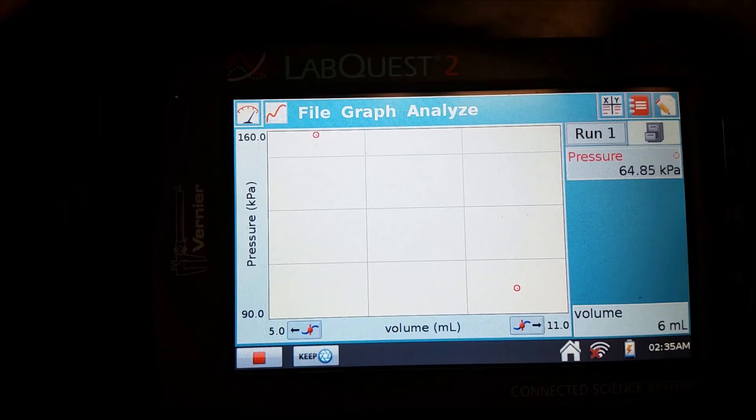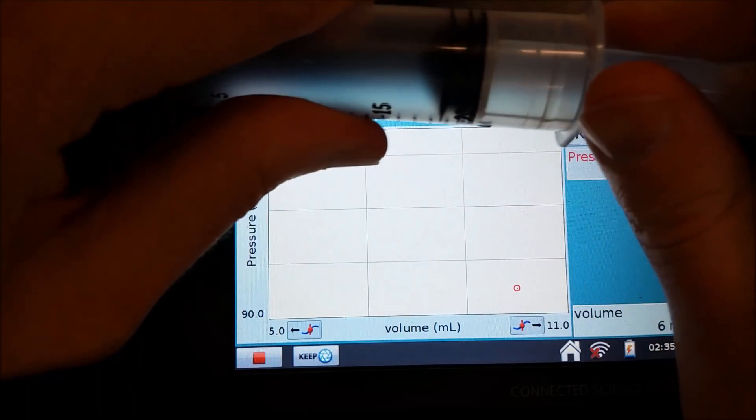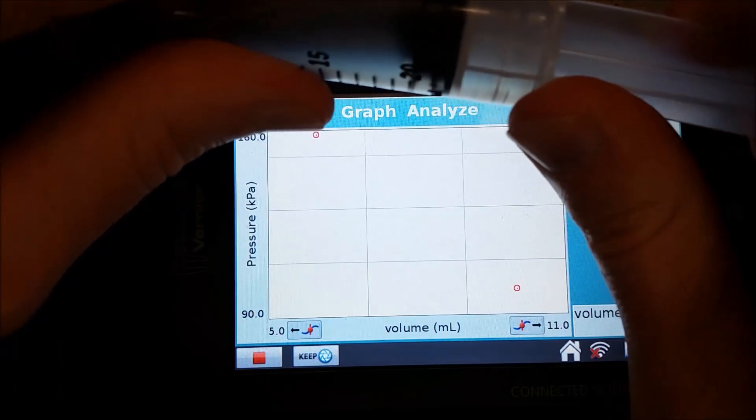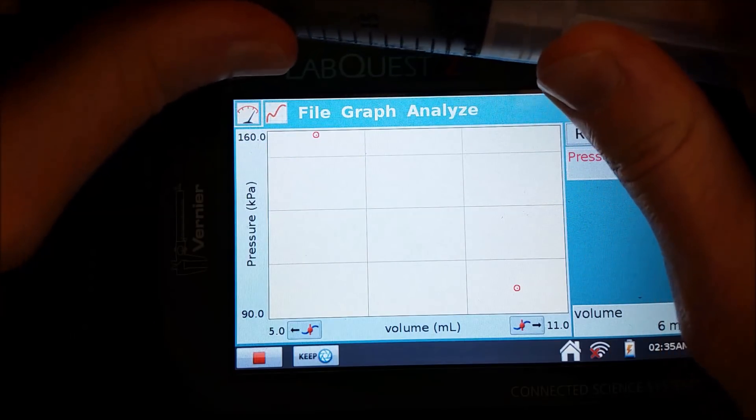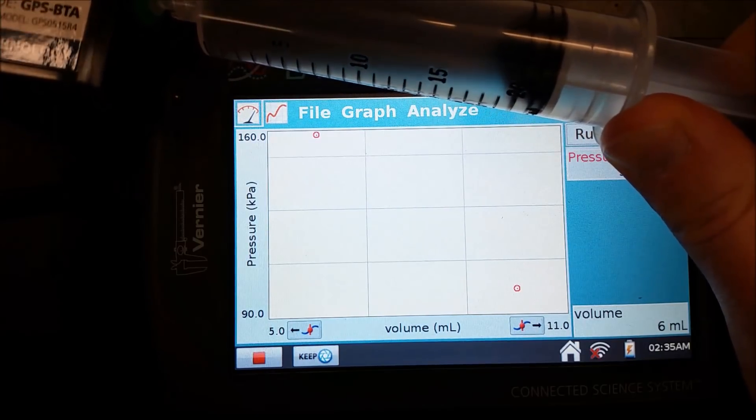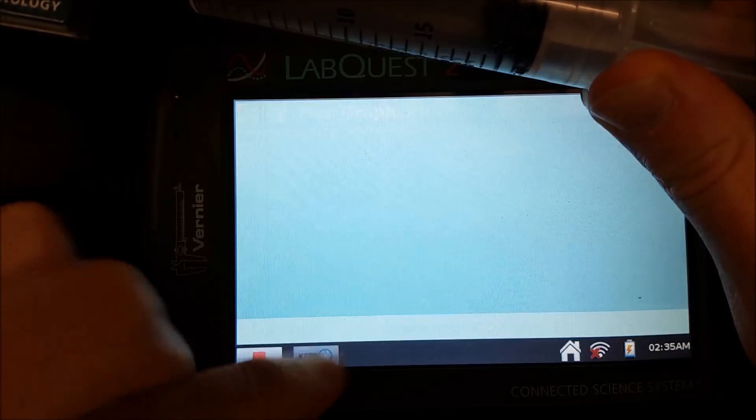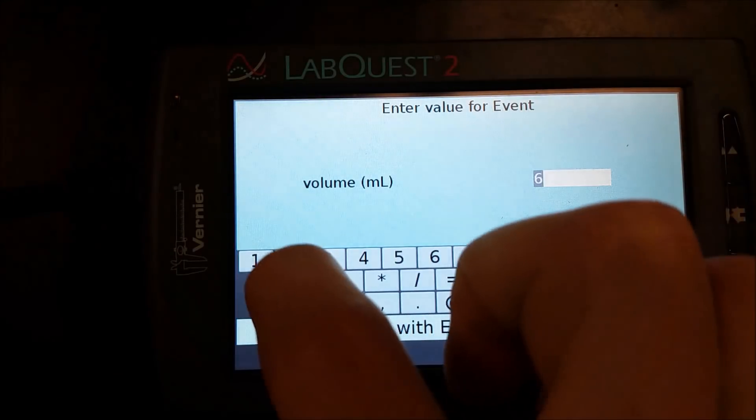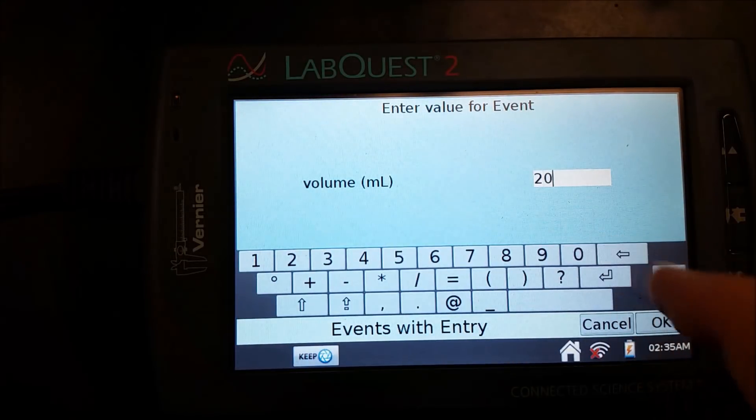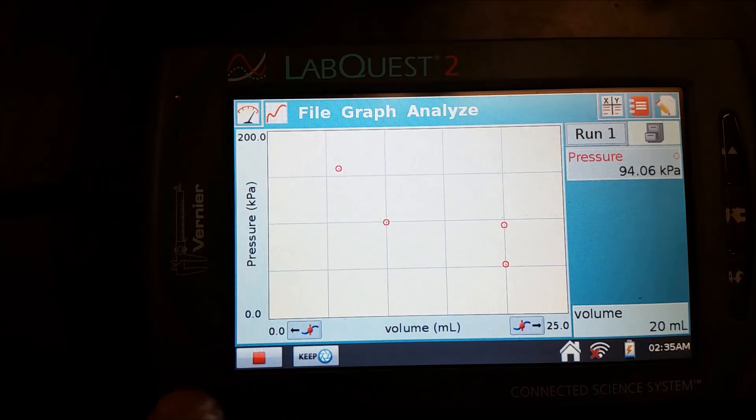And let's go ahead and take one that's far out. Right around there, we're just about 20. Let's hit keep, and we'll type in 20 milliliters. So now we've got three data points. Let's go ahead and stop there. You can go further with yours if you want. Actually, let's do a couple more.